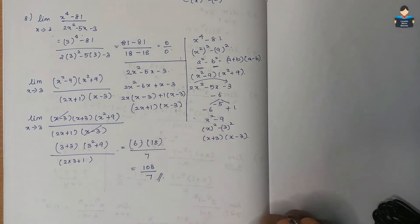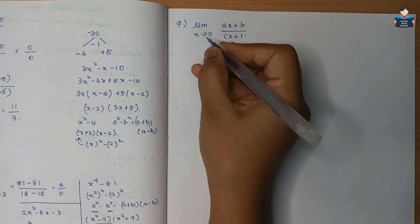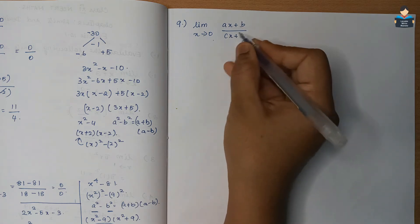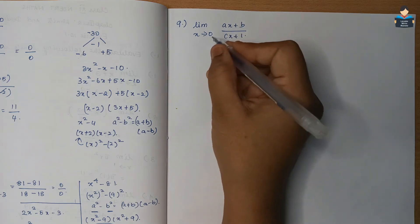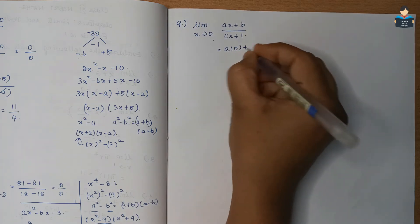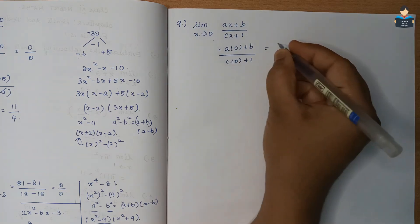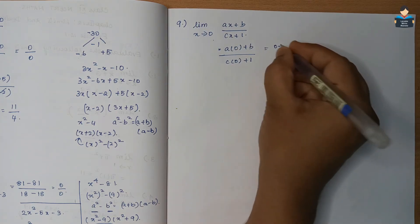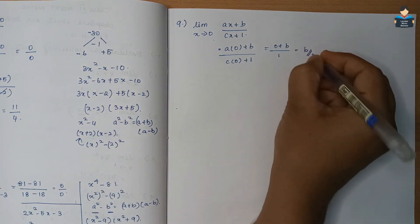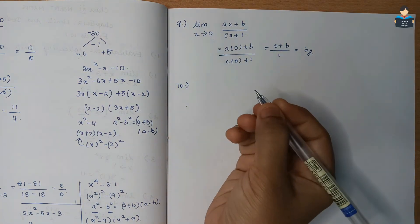Ninth question: limit x tends to 0 of (ax + b)/(cx + 1). Substituting x = 0: (a×0 + b)/(c×0 + 1) = b/1 = b. So the answer is b.